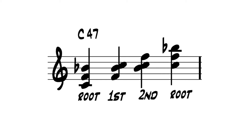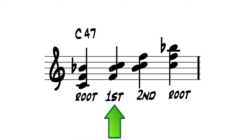Now that you've played them in two octaves, what you've also done is outlined all the possible inversions of our quartal. That's right — quartals also have inversions. So C4,7 in root position is C, F, Bb. In first inversion it's F, Bb, and C. And in second inversion it's Bb, C, and F.